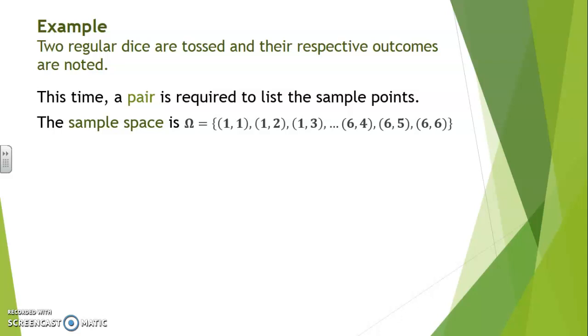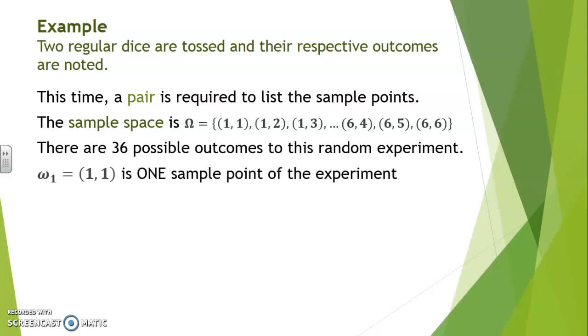There are 36 possible outcomes to this random experiment. Omega 1, which consists of the pair (1,1), is one sample point of the experiment.